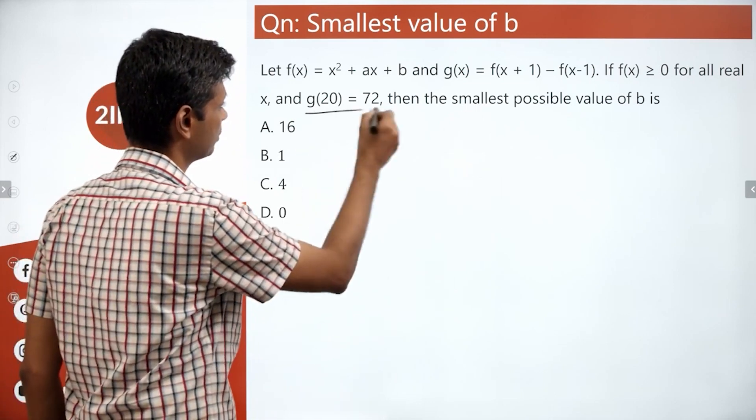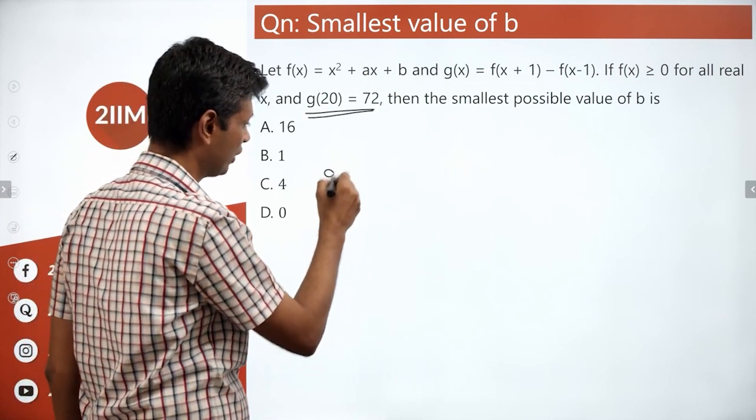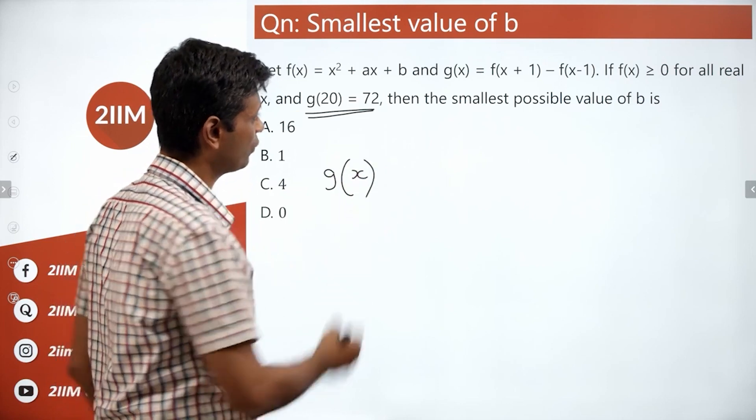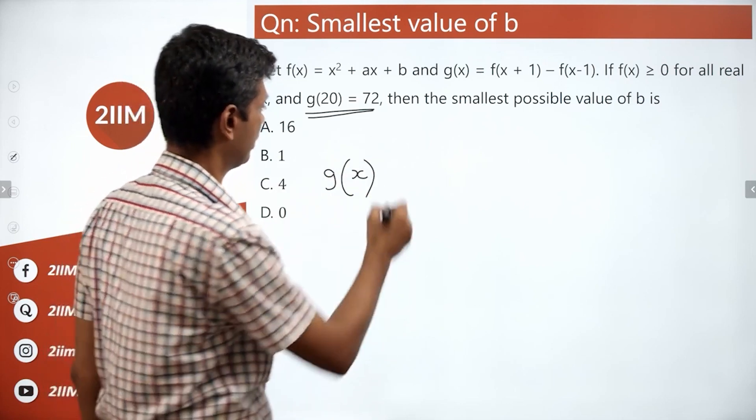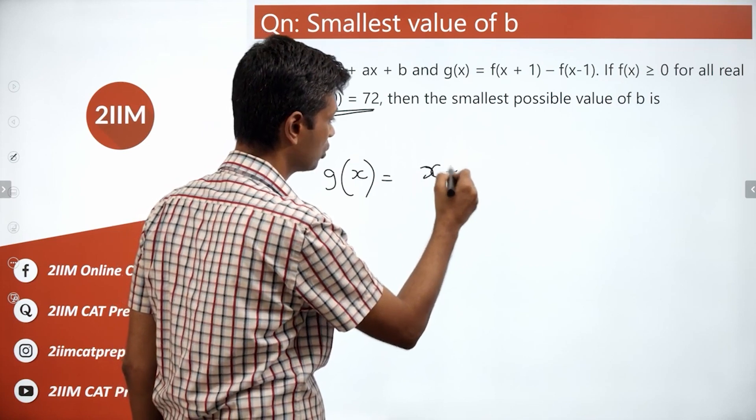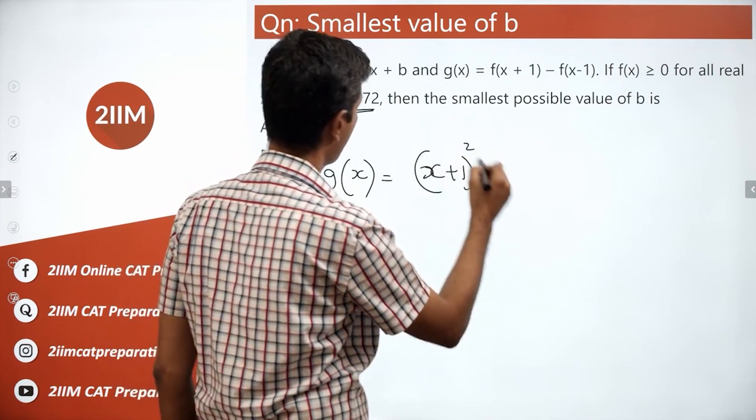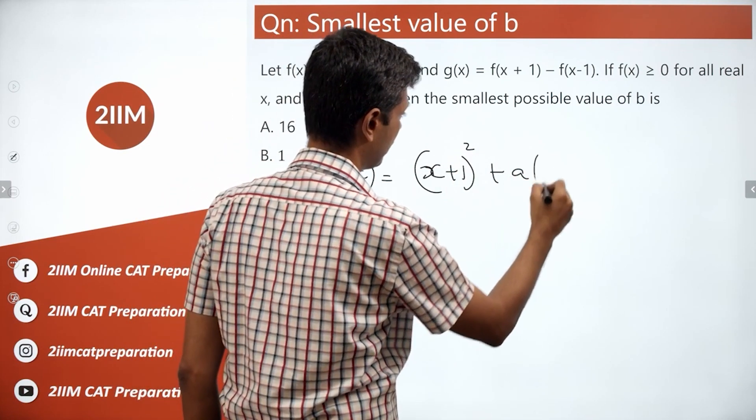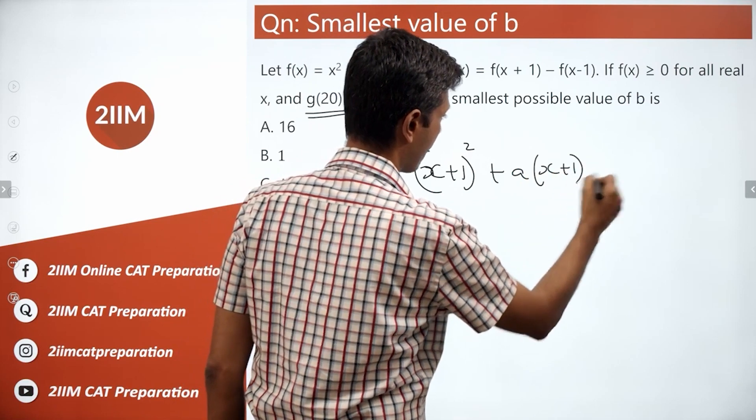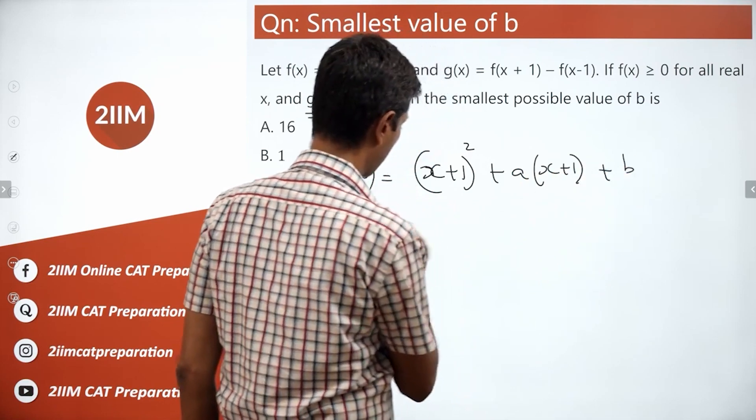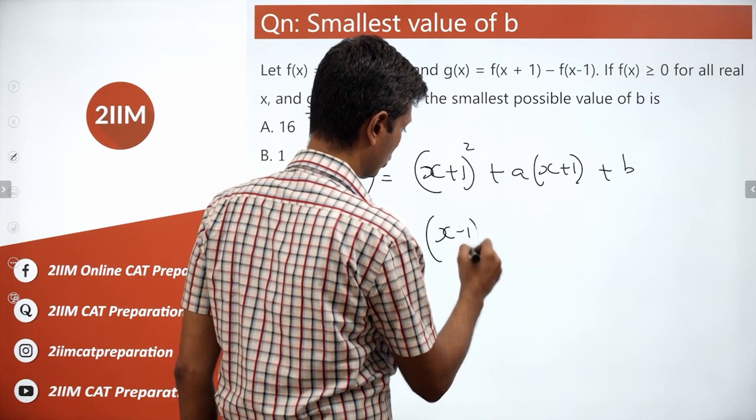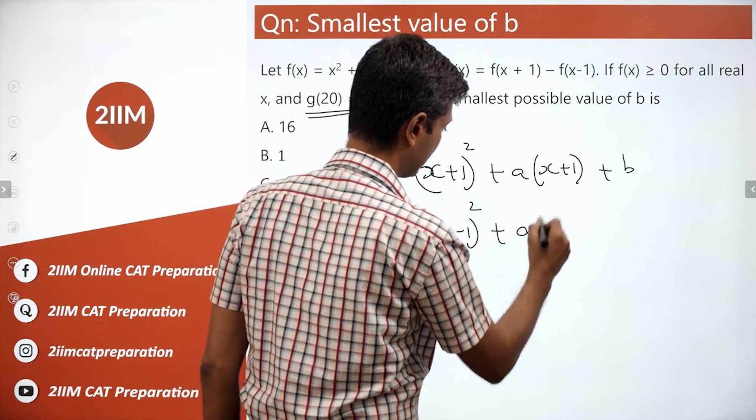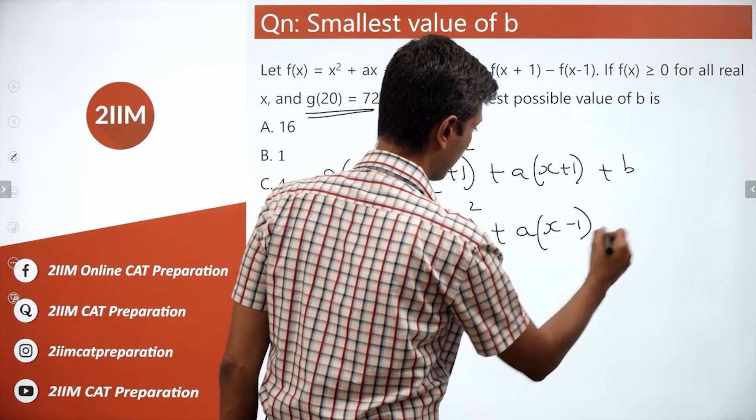Let's define g(x) first. f(x+1) - f(x-1) is (x+1)² + a(x+1) + b minus (x-1)² plus a(x-1) plus b.